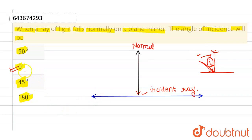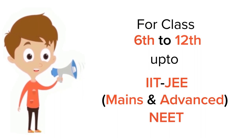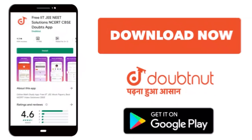So the correct option is 0 degrees, and all other options are incorrect. I hope you understood. Thank you. For class 6 to 12, IIT-JEE and NEET level, trusted by more than 5 crore students. Download Doubtnut app today.